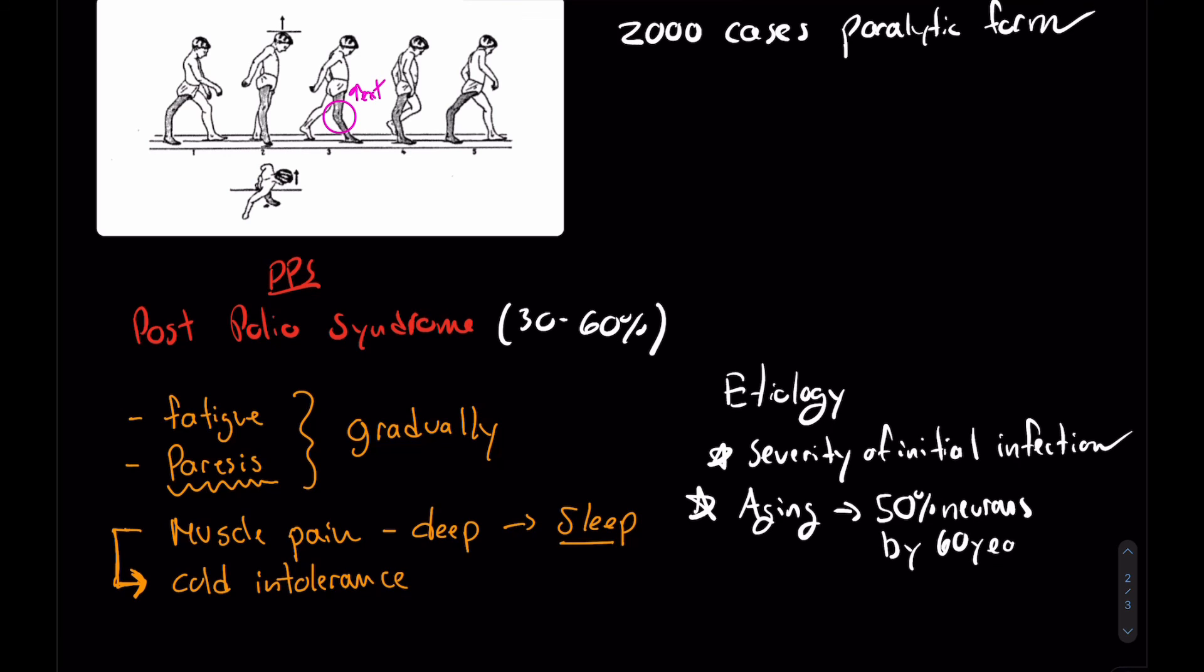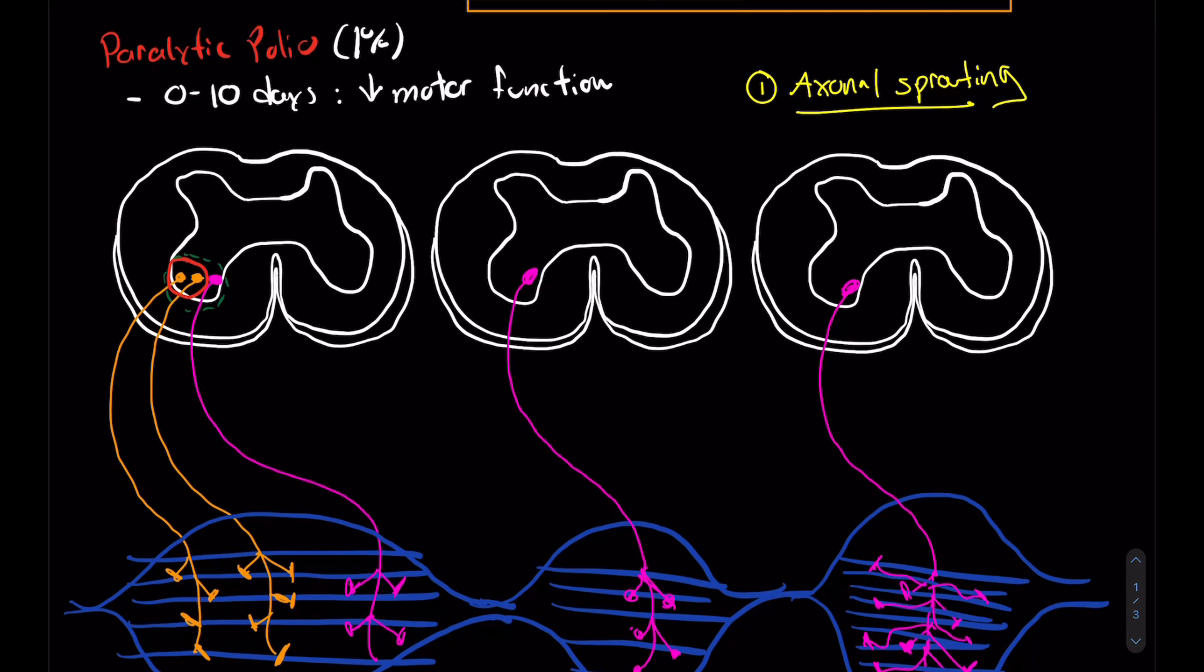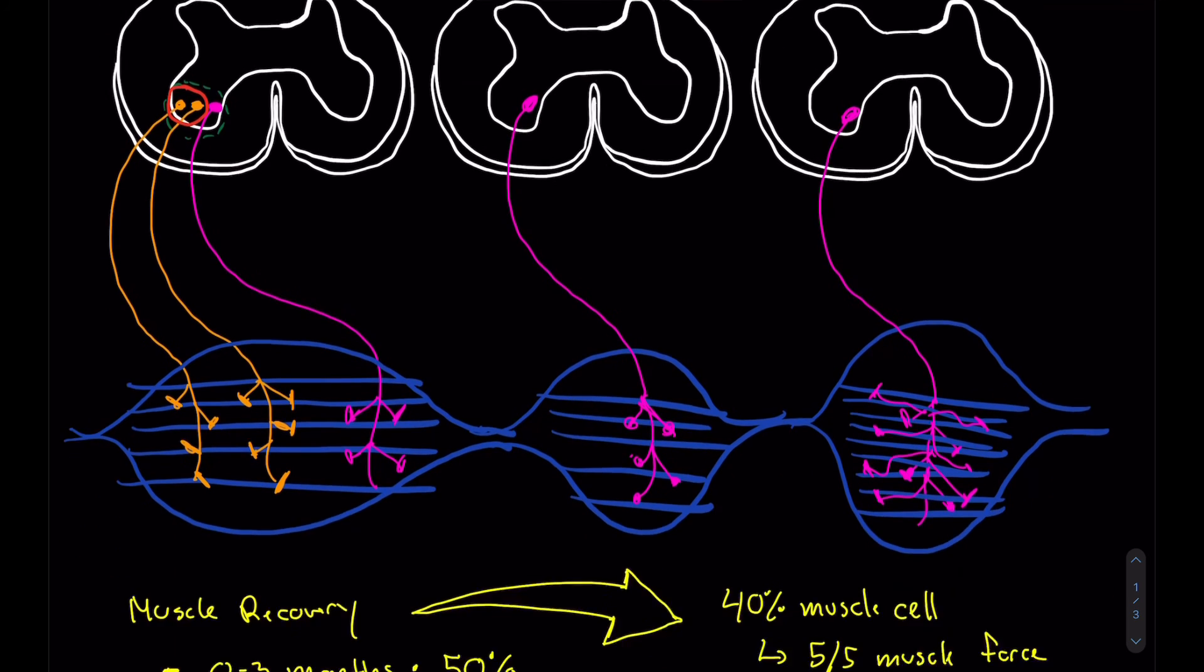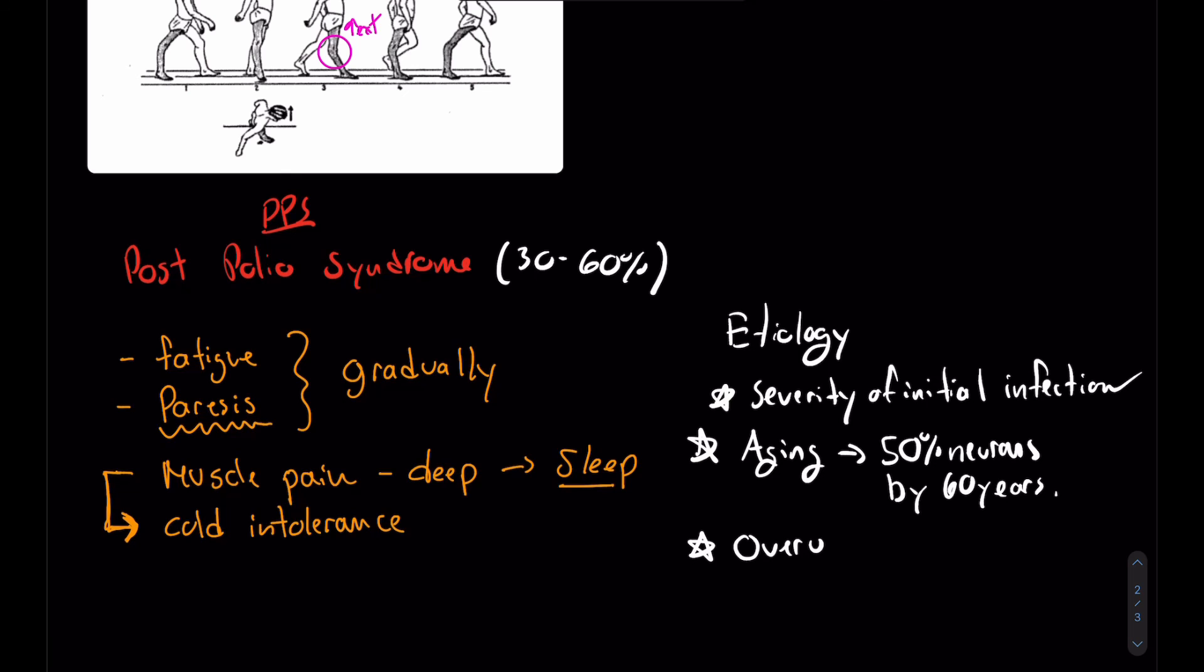You're already functioning on very huge motor units. If you lose that motor unit, the only one you have left, well, your condition is going to deteriorate drastically. Another cause would be overuse. In the next video, I will present to you a case study, and I will explain the treatment for people with the post-polio syndrome, and what we can do for them in physiotherapy.